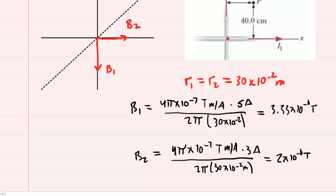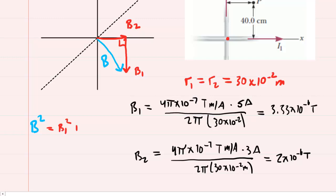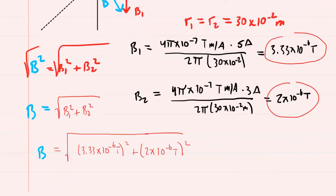To get the overall magnitude, we take our vectors and align them tip to tail. We can slide B1 over so they're aligned tip to tail, and the resultant will be the hypotenuse of our right triangle. From the Pythagorean theorem, B squared equals B1 squared plus B2 squared. Taking the square root of both sides, the magnitude of the magnetic field equals the square root of B1 squared plus B2 squared. Plugging in our values and computing, we get approximately 3.88 times 10 to the minus 6 tesla.